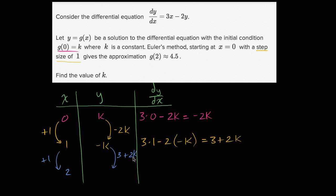3 + 2k, or -k plus 3 + 2k, is just gonna be 3 + k. And they're telling us that our approximation gets that to be 4.5. So 3 + k = 4.5. So the k that we started with must have been, if we subtract 3 from both sides, k must equal 1.5.